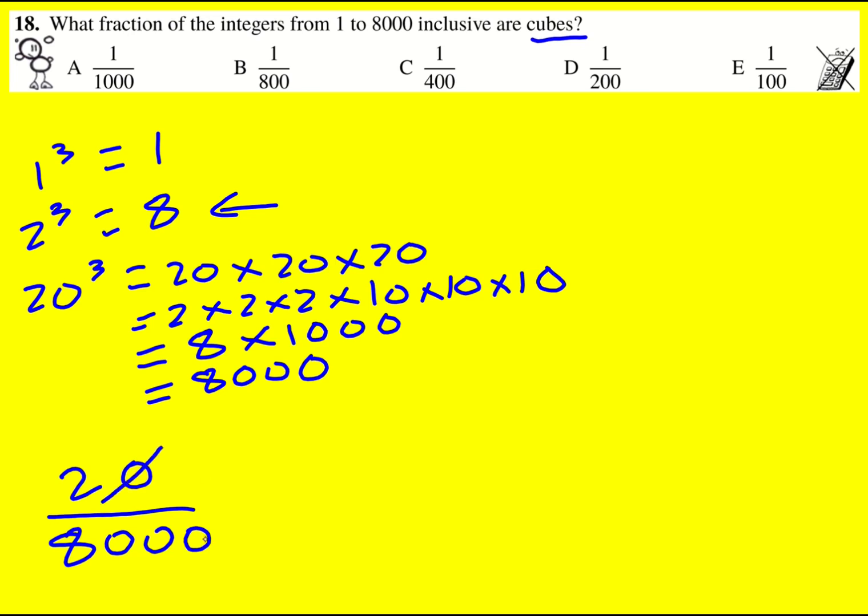And we can cancel this down. First of all, it's just going to become 2 over 800, and then 1 over 400. That is the fraction of integers from 1 to 8,000 inclusive that are cubes.